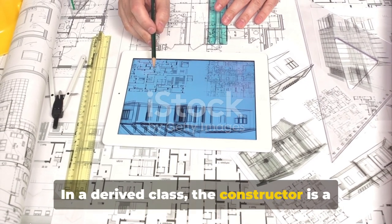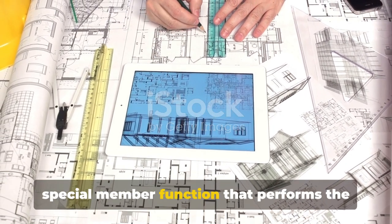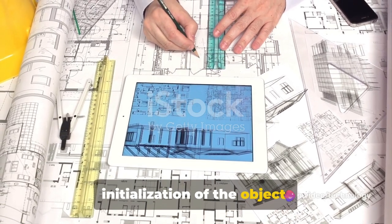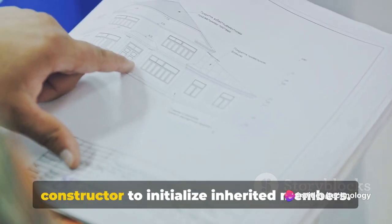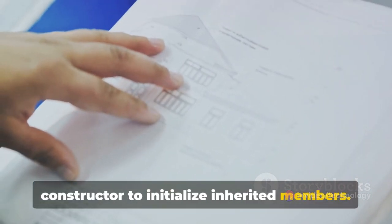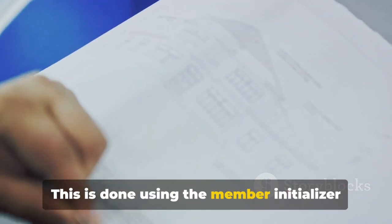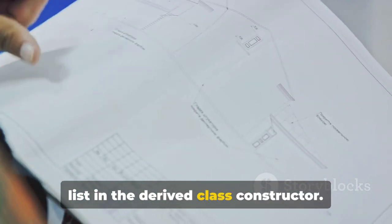Let's talk about constructors first. In a derived class, the constructor is a special member function that performs the initialization of the object. But here's the catch: the derived class constructor can call the base class constructor to initialize inherited members.